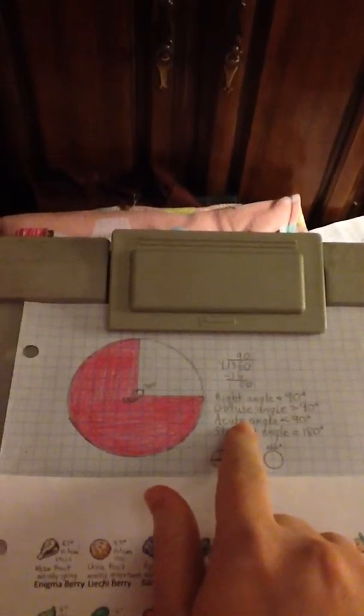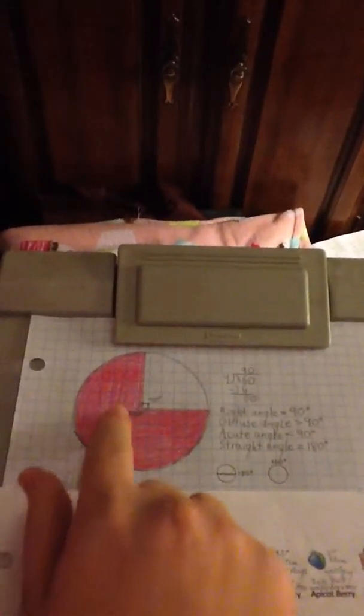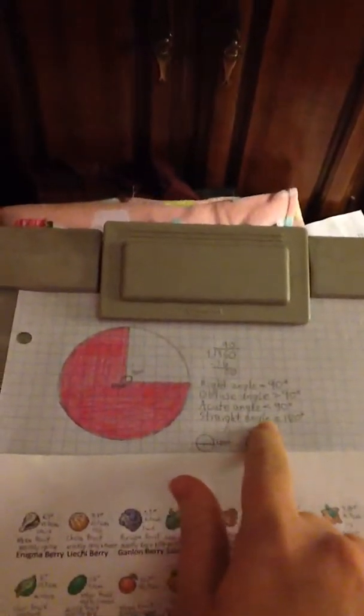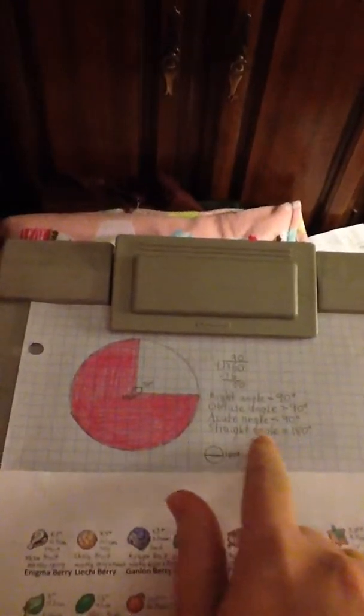An obtuse angle is greater than 90 degrees, so see the three-fourths or 75% of the circle is 270 degrees, and that's definitely larger than 90 degrees. An acute angle is less than 90 degrees, and a straight angle is 180 degrees. It's just a straight line, because it's half a circle. There are other angles, too, but they're not important to this.